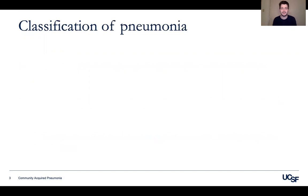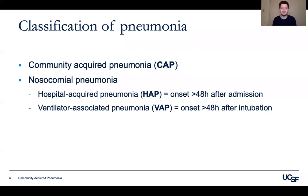Let's start off with classification. Community Acquired Pneumonia, or CAP, as its name implies, is acquired in the community. This distinguishes it from nosocomial pneumonia, which is acquired in a healthcare setting. The definitions for the classifications of pneumonia have changed over the years, but there are two important subcategories of nosocomial pneumonia: hospital-acquired pneumonia (HAP), characterized by onset of symptoms greater than 48 hours after admission, and ventilator-associated pneumonia (VAP), characterized by onset of symptoms greater than 48 hours after intubation.